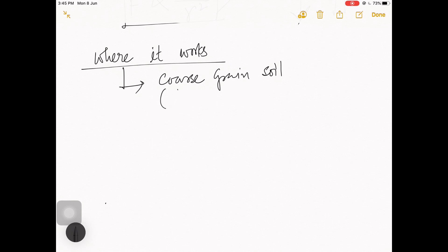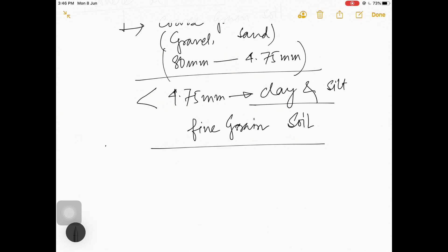Where does this gravitational force act? Gravitational force is very important for coarse-grained soil, meaning gravel and sand. Coarse-grained soil has a particle range from 80mm to 4.75mm. After that, we have clay and silt, which are known as fine-grained soil.